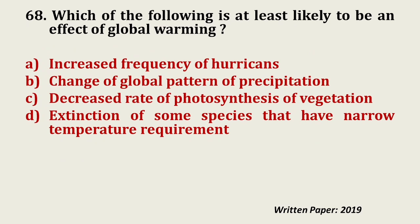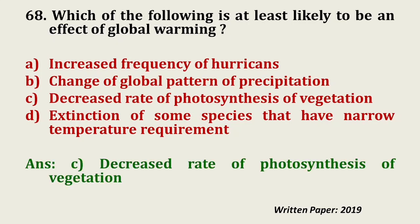Question number 68: Which of the following is least likely to be an effect of global warming — increased frequency of hurricanes, change of global pattern of precipitation, decreased rate of photosynthesis of vegetation, or extinction of some species that have narrow temperature requirements? The answer is decreased rate of photosynthesis of vegetation.